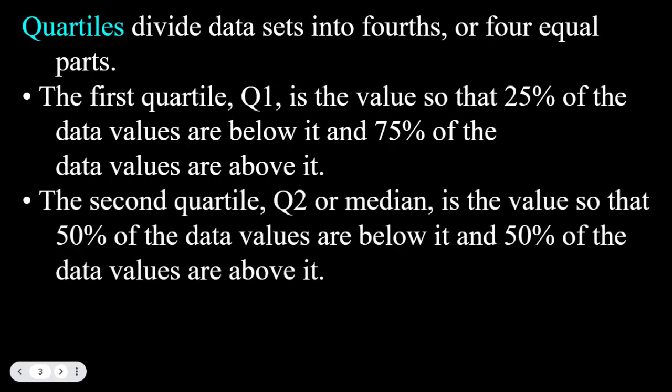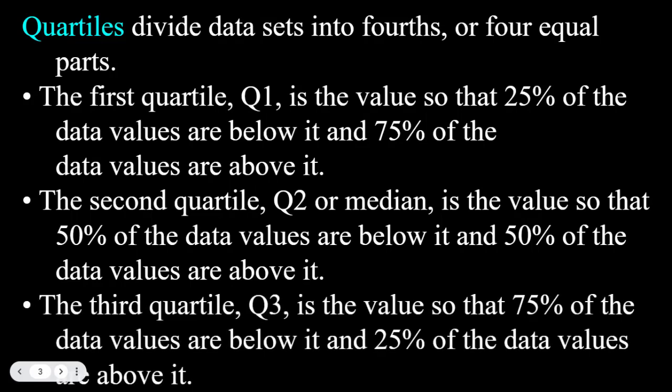The second quartile, Q2, also called the median, is the value so that 50% of the data values are below it and 50% are above that Q2 value. The third quartile, Q3, is the value so that 75% of the data values are below it and 25% will be above it. You're dividing your total values into four equal groups: 25%, 25%, 25%, 25%.